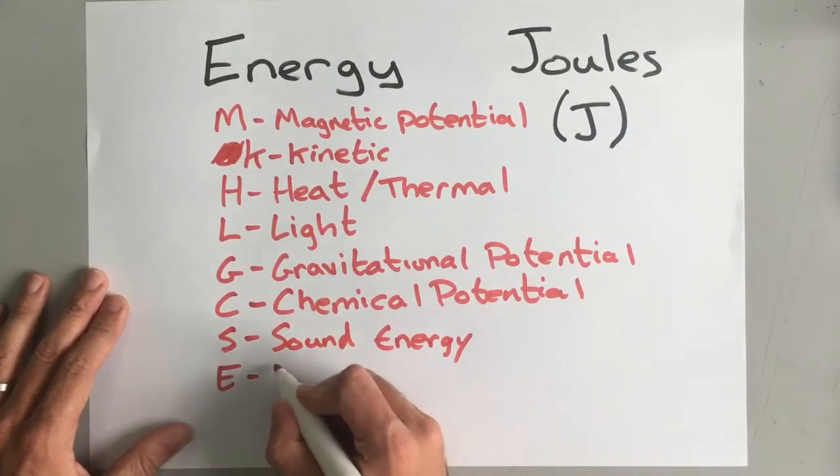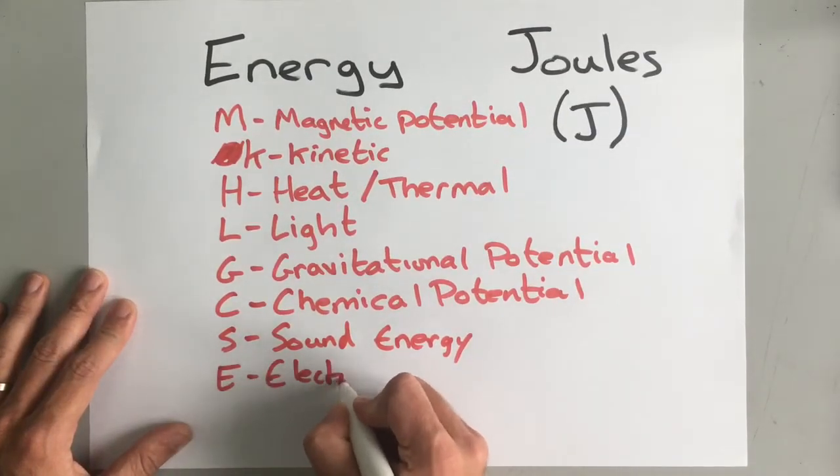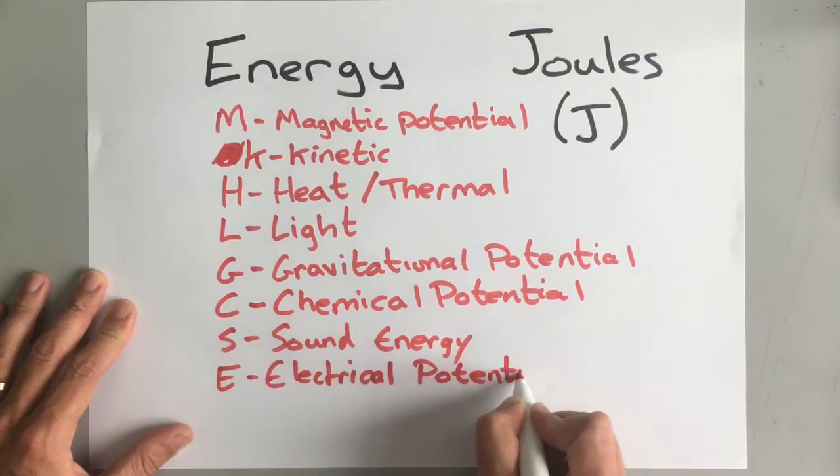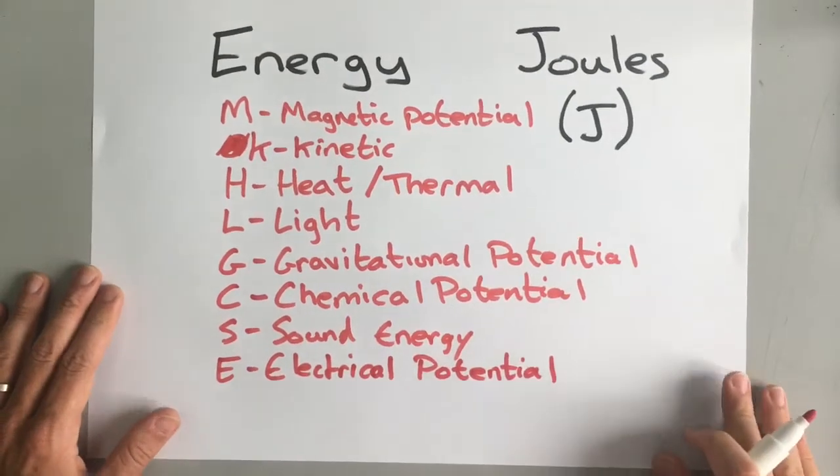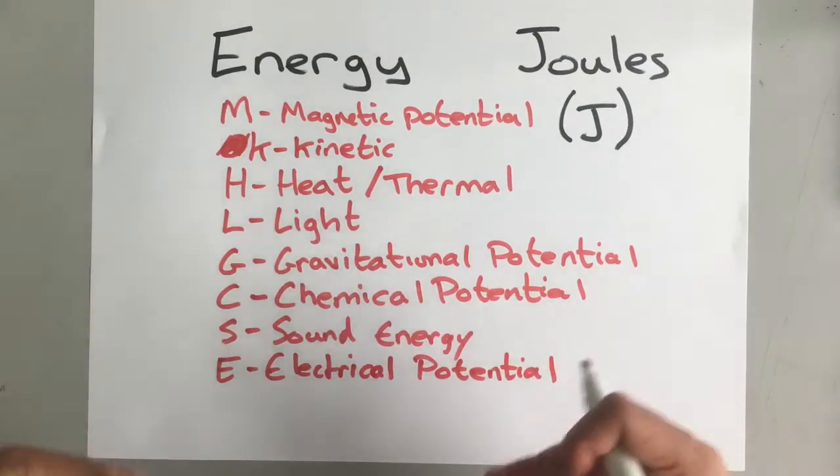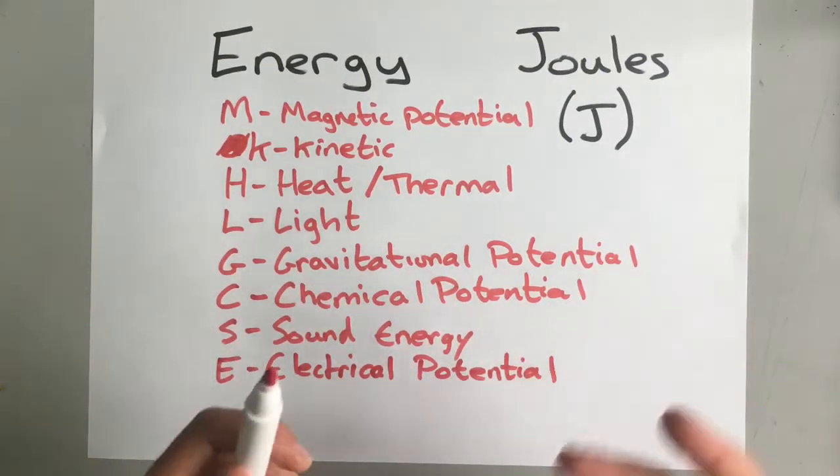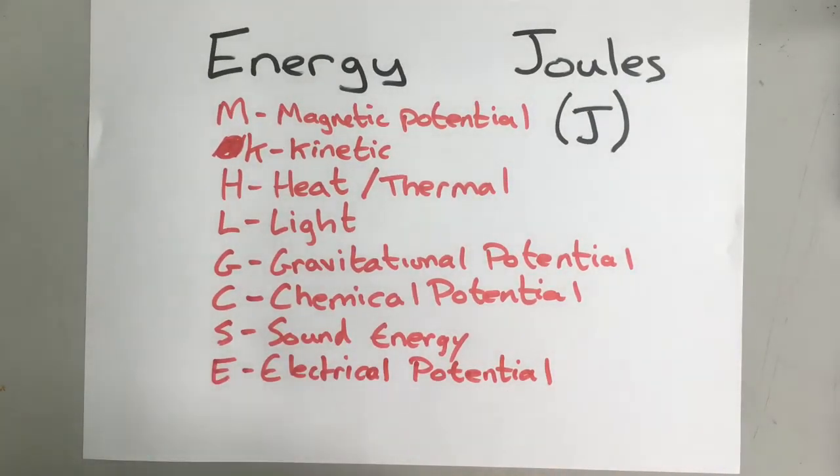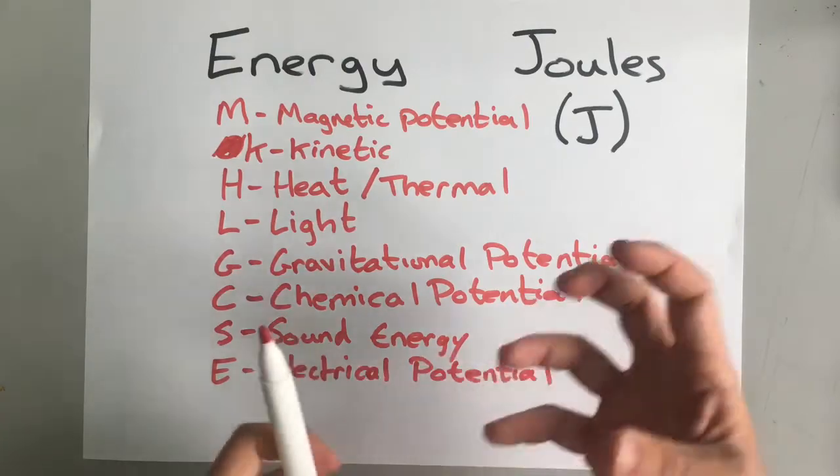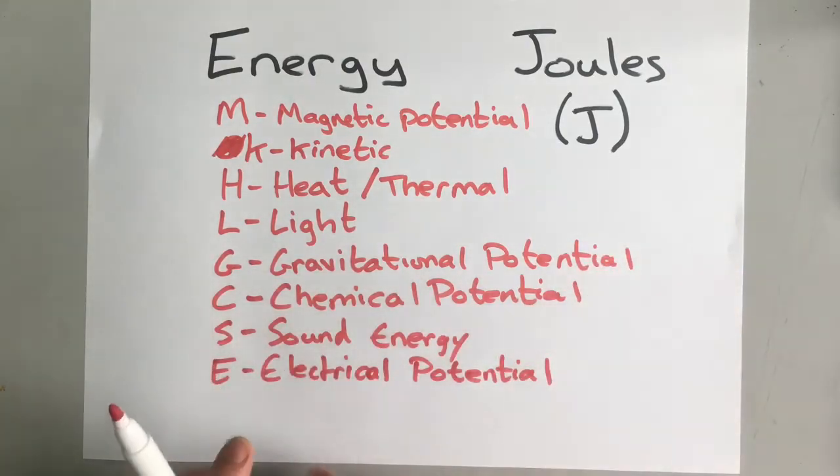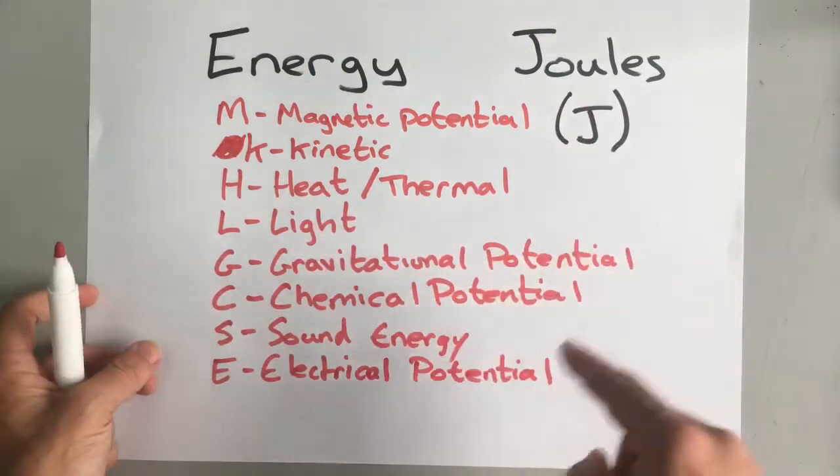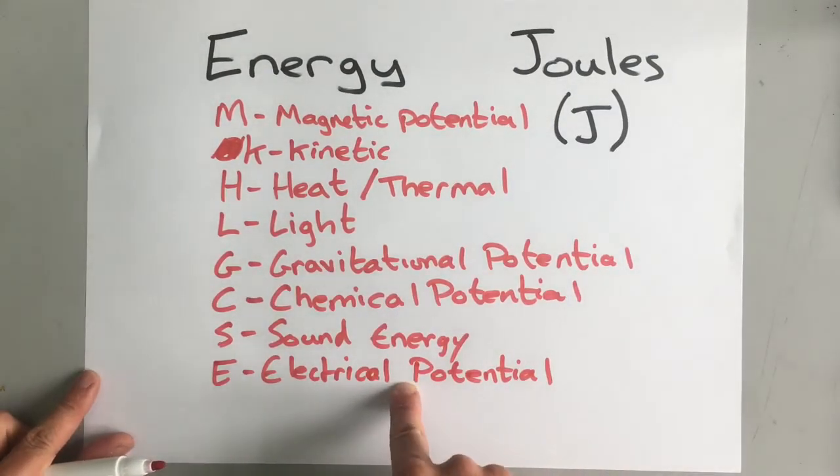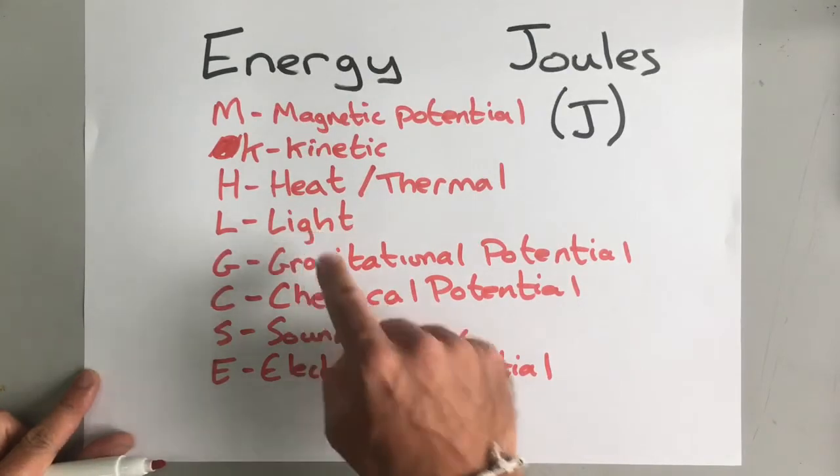Our next one is electrical potential. Electrical potential because it has the potential, the possibility to be converted into another type of energy very easily. So for example, your battery would store chemical potential. That would be converted into electrical potential in the wires and then that would light up a bulb and it would be converted from electrical potential energy into light energy.